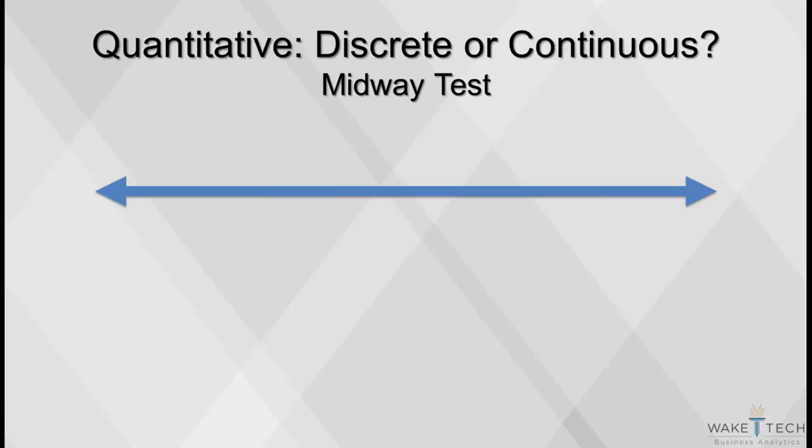To determine whether a variable is discrete or continuous, use the midway test. If for every pair of values of a quantitative variable, the value midway between them is a meaningful value, then the variable is continuous. Otherwise, it's discrete.